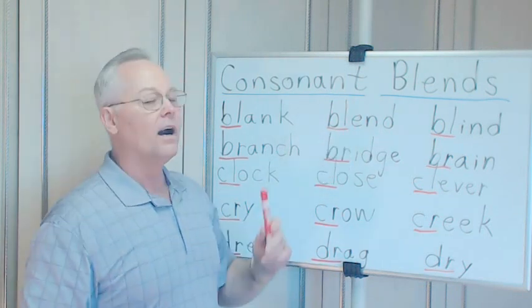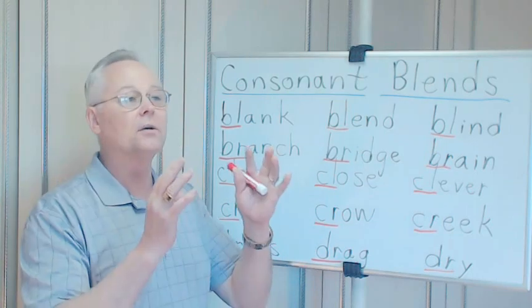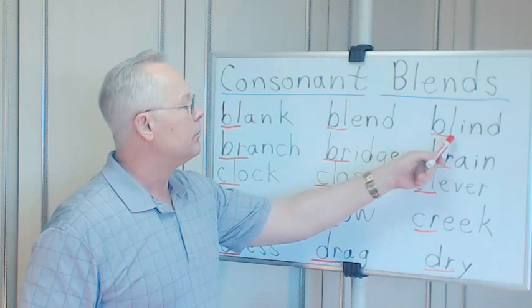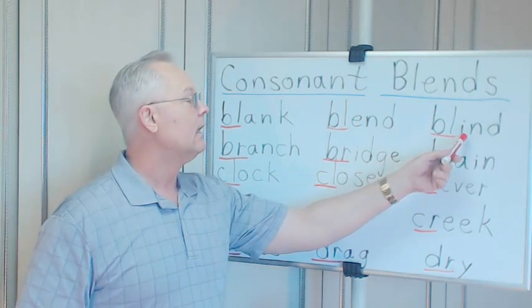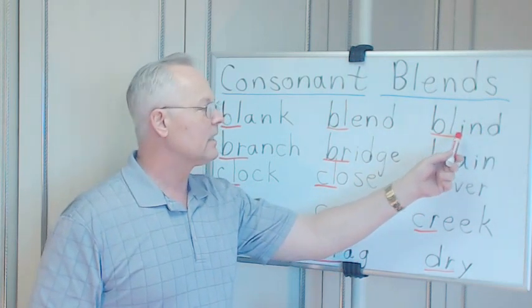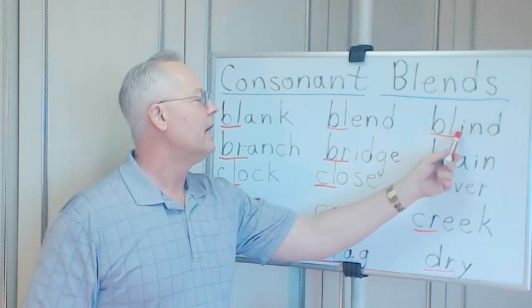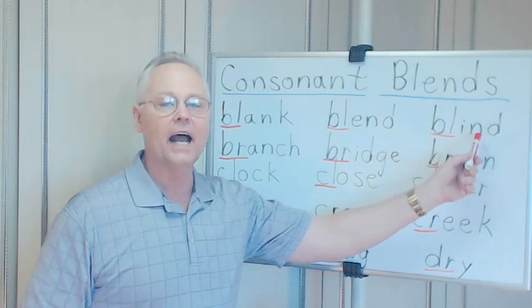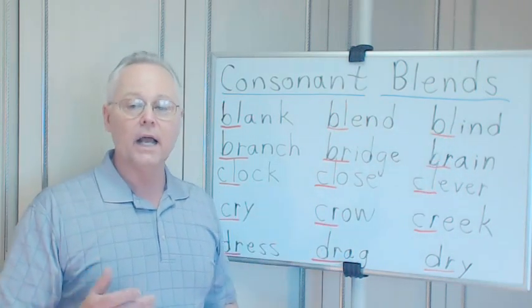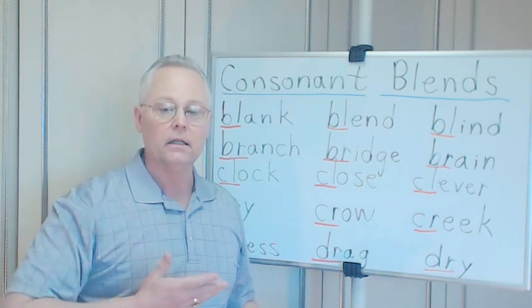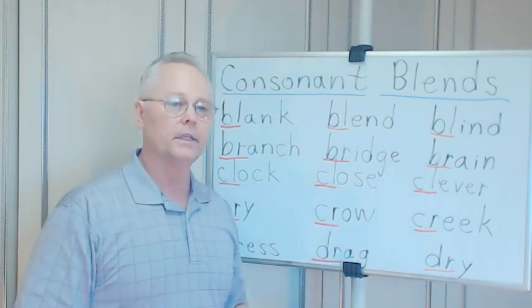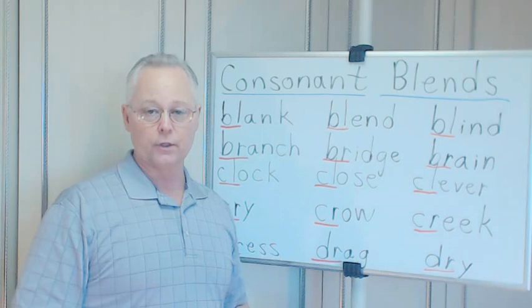Blind. BL 'blah', I-N-D. I-N is 'in', D 'duh', but it's not blend. This changes - I-N-D sounds like 'ind', a long I sound. Blind is when someone cannot see, they have no eyesight. They're a blind person. Now in modern times we don't really say they're blind, we say they're visually impaired.